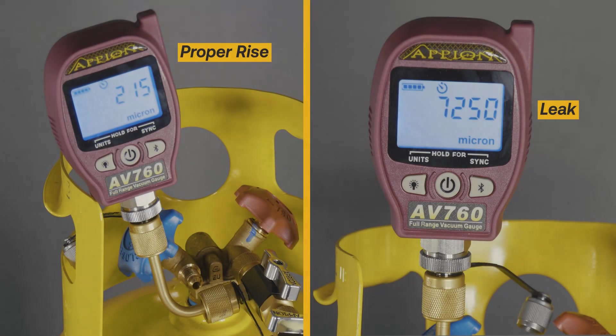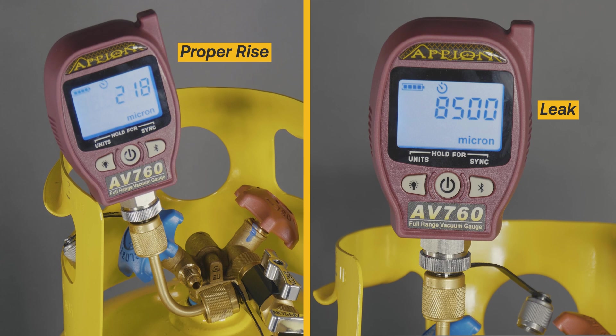When we compare a proper rise to a leak in the tool, you can see that the proper vacuum will have a slight rise that will eventually equalize as more time passes. This is opposed to the leaky tool that will have a steady rise all the way back to atmosphere as time goes on.